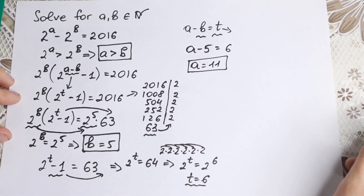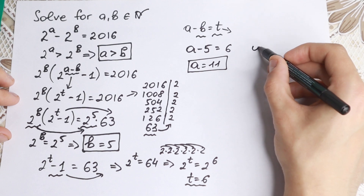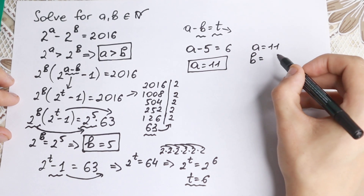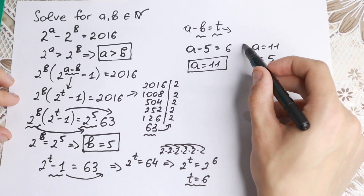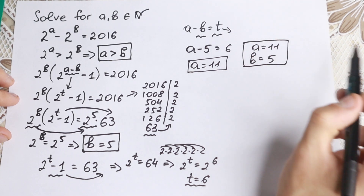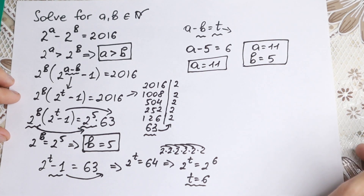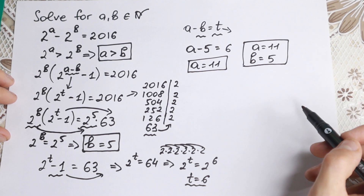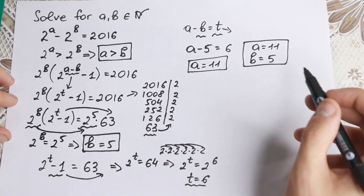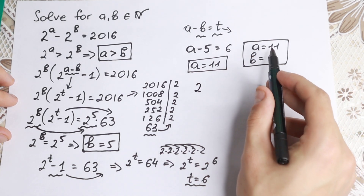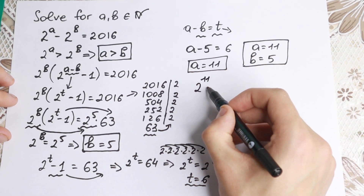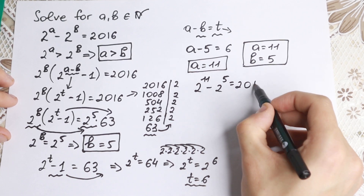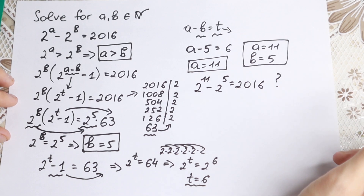So our answer is a equals 11 and b equals 5 — this is our integer pair solution. Let's check it quickly: 2 to the 11th power minus 2 to the 5th power should equal 2016. Is it correct?